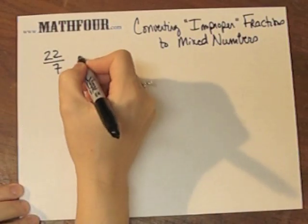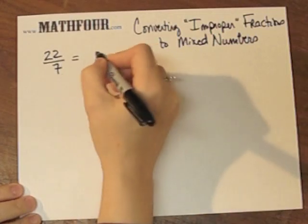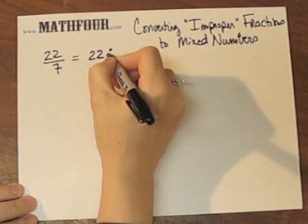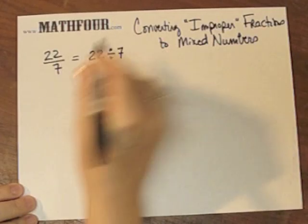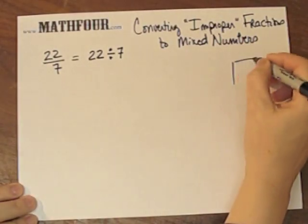So here's 22 sevenths. 22 sevenths really means 22 divided by 7. This is just another way of saying divided by. Notice that when you have a fraction...